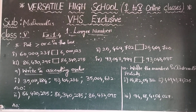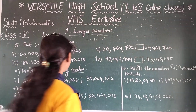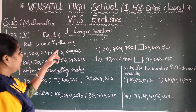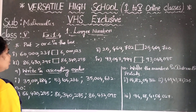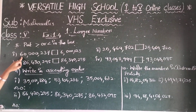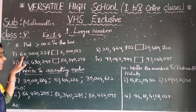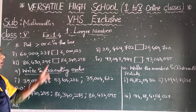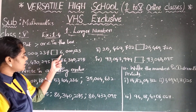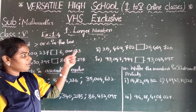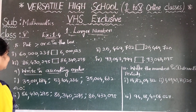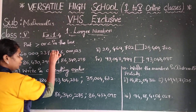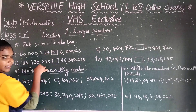Next, put greater than or less than in the box. The first pair: 60,000,237 and 6,000,023. Which is the greatest number? 60 millions is the greatest number. Put the greater than mark.